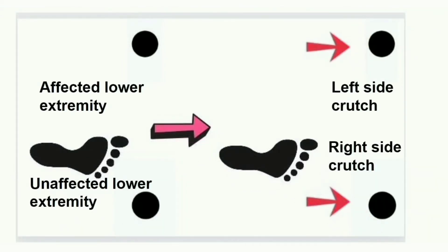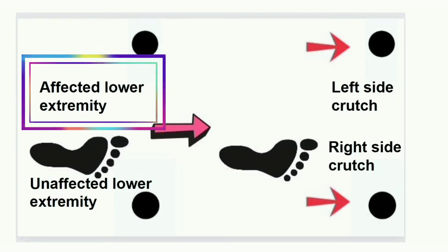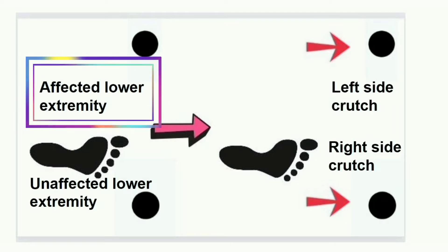Here, the right lower extremity is the unaffected lower limb. The left side is the non-weight bearing limb, which means the foot will not contact the floor.